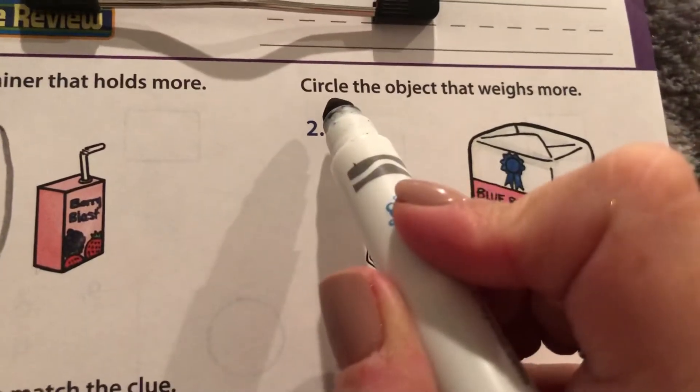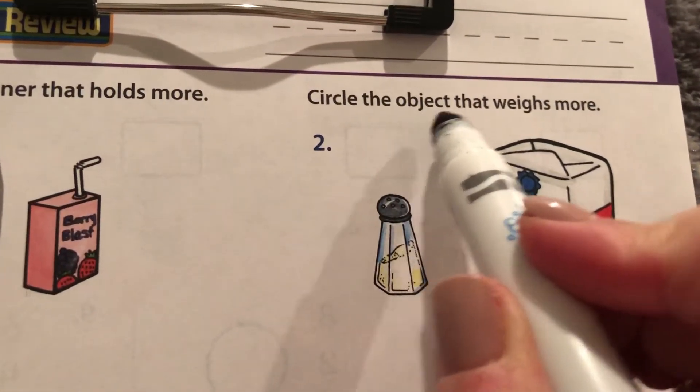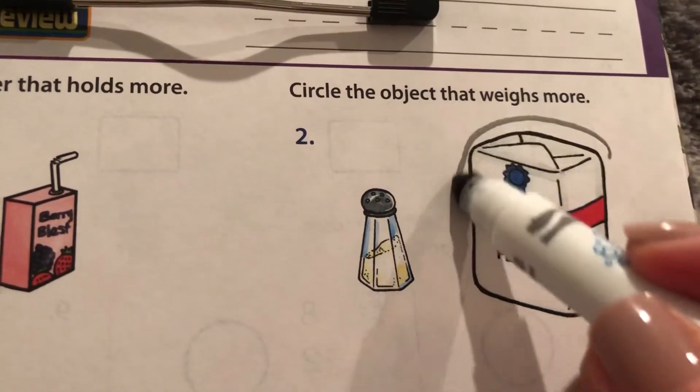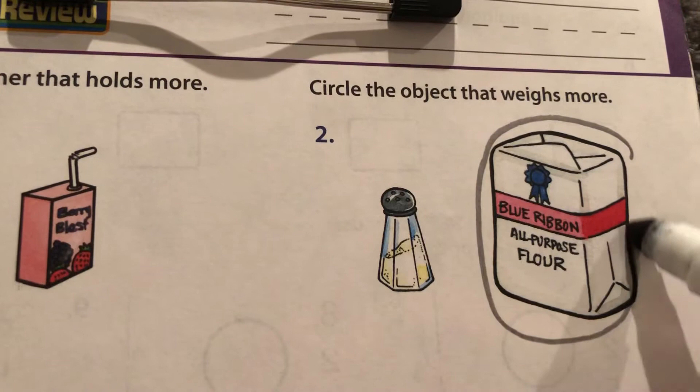Now this one says circle the object that weighs more. Which one would weigh more? This big thing of flour weighs more than a salt shaker, huh?